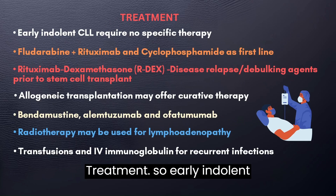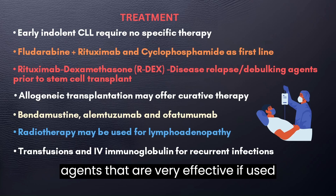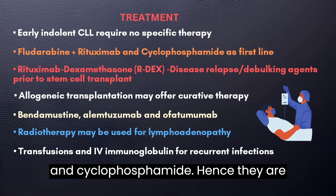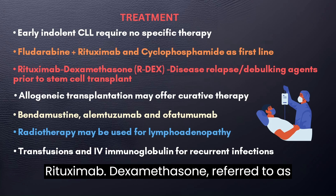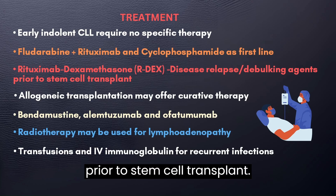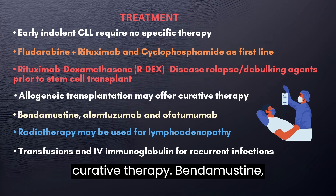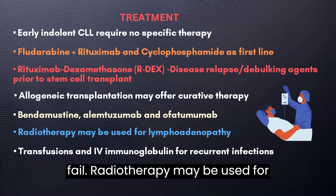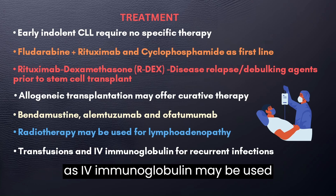For treatment, early indolent chronic lymphocytic leukemia requires no specific therapy. Three agents are very effective when used together — cladribine, rituximab, and cyclophosphamide — and are recommended as first-line treatment. Rituximab-dexamethasone, referred to as ARDEX, is used during disease relapse or as a debulking agent prior to stem cell transplant. Allogeneic transplantation may also offer curative therapy. Bendamustine, alemtuzumab, and ofatumumab may be used if first-line agents fail. Radiotherapy may be used for lymphadenopathy, and transfusions as well as IV immunoglobulin may be used for recurrent infections.